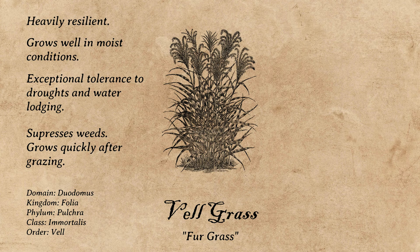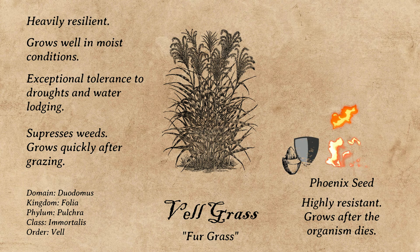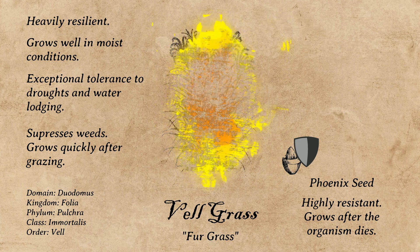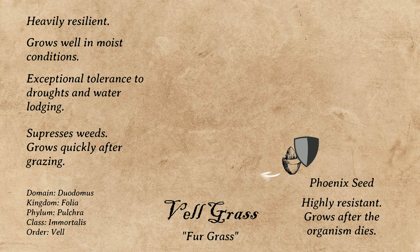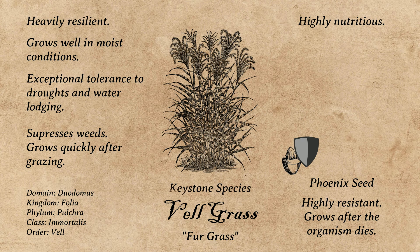Let's make our own savannah grass called velgrass, which will be one of the most resilient flora across the planet. It grows especially well in moist conditions, though it's developed exceptional tolerance to droughts and waterlogging. It suppresses weeds and grows quickly after grazing. As an immortalis, it has what's called a phoenix seed below the surface — a highly resistant seed designed to grow only after the organism dies. Velgrass's phoenix seed is exceptionally heat-resistant: when bushfire incinerates the above-ground organism, its phoenix seed germinates and regrows the plant. Velgrass is highly nutritious, and considering its hardiness and ability to quickly regrow after bushfire, it is a keystone species within the savannas of locusts, with almost all creatures reliant on its availability to thrive.